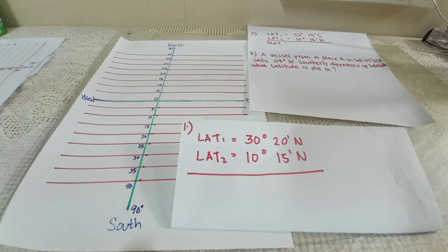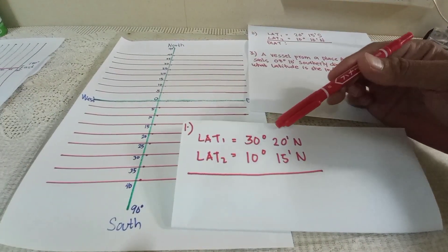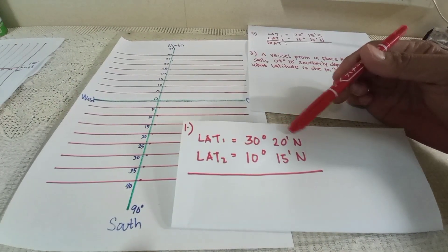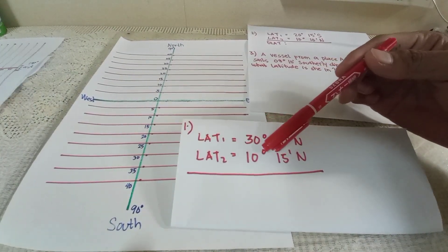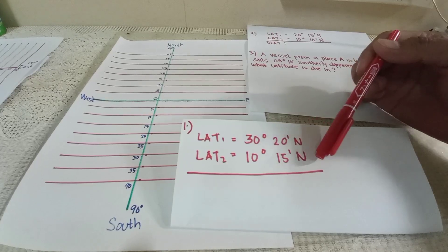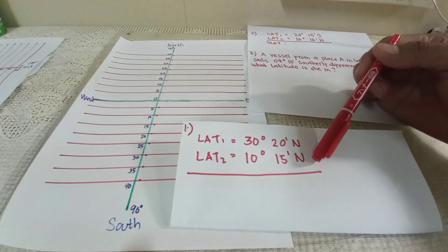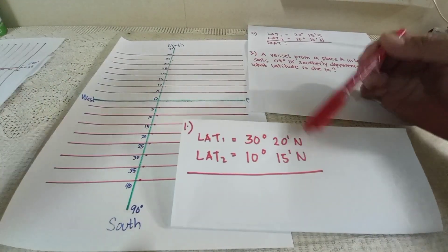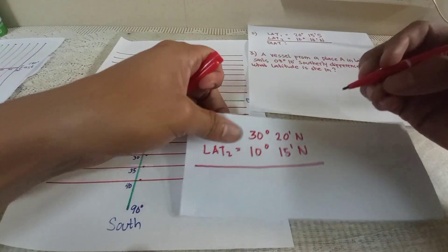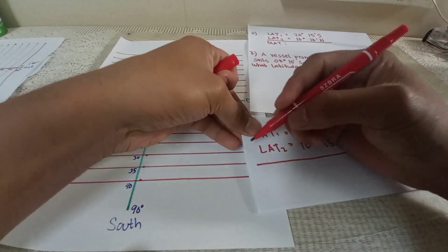Let's start with DLat. Example number 1: we have latitude 1, 30 degrees 20 minutes North, and latitude 2 is 10 degrees and 15 minutes North. Since this is same name, we have to subtract.